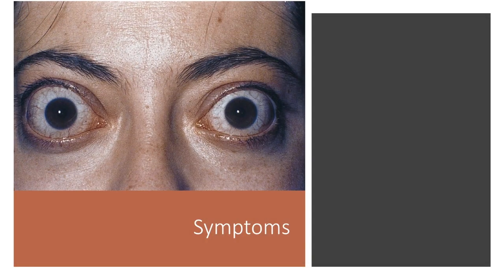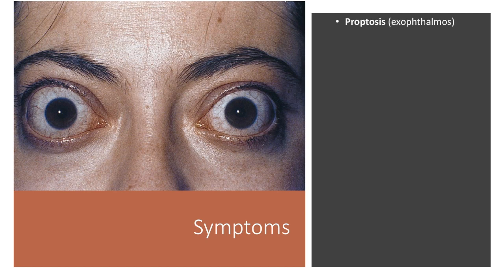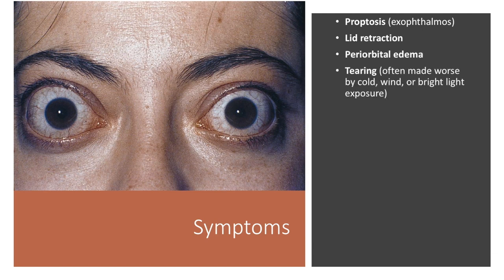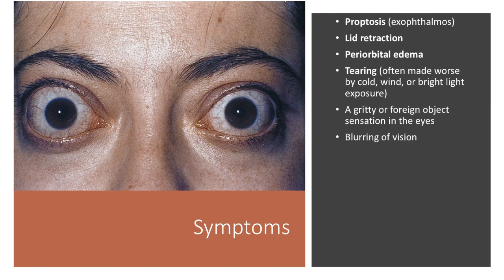Now we arrive at the myriad of possible symptoms this disease can produce: proptosis or exophthalmos, which is the bulging discussed previously; lid retraction; periorbital edema; tearing; a gritty or foreign object sensation in the eyes; and blurring of vision.